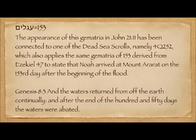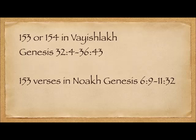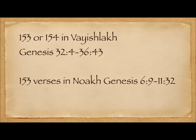In fact it's very close. Genesis 8:3 says, 'And the waters were turned off the earth continually, and after the end of 150 days the waters were abated.' There is some discussion as to whether there are 153 or 154 verses in Parsha Vayishlach. The Stone's Chumash says 154, but there are 153 verses in Parsha Noah — Genesis 6:9 through 11:32 — which is undoubtedly why the Dead Sea Scrolls people connected it back to that gematria of 153.